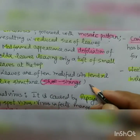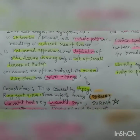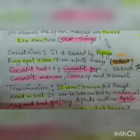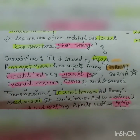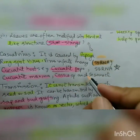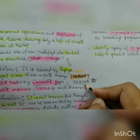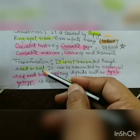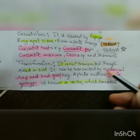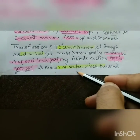The leaves are often modified into tendril-like structures — they become shoestring-shaped, like the lace of a shoe. So every day we tie our shoes, we should remember that this shoestring symptom is characteristic of mosaic of papaya, which is caused by papaya ring spot virus. The virus infects many cucurbit hosts — Cucurbita maxima, Cassia and Sesamum. This disease involves single-stranded RNA, whereas leaf curl involves single-stranded DNA.